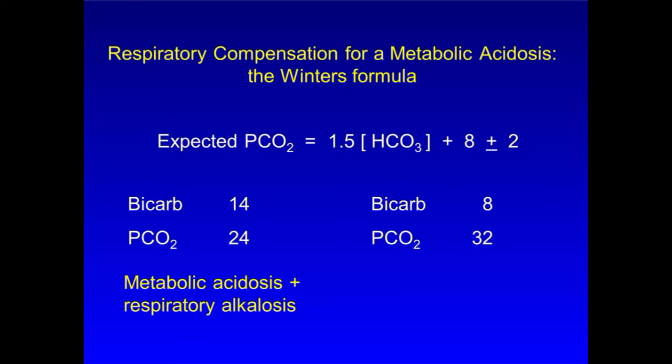In the second example, with a serum bicarb of 8, WINTERS predicts a PCO2 of 1.5 times 8, or 12, plus 8, plus or minus 2, which is 20, plus or minus 2 for the PCO2. And the actual PCO2 of 32 suggests the presence of a respiratory acidosis that is causing hypoventilation beyond what is expected.